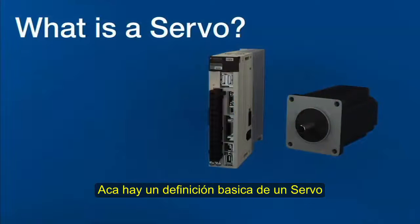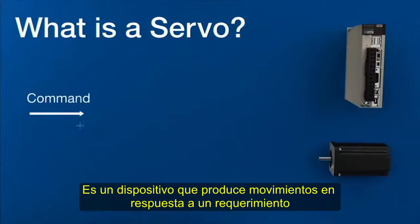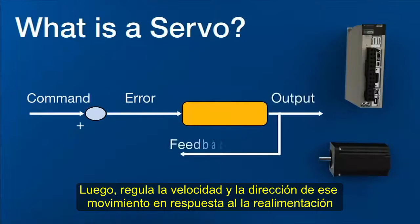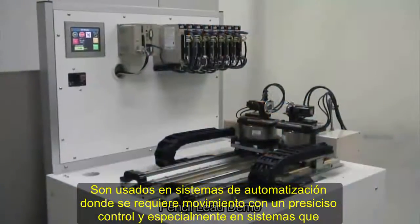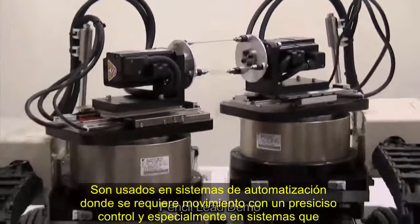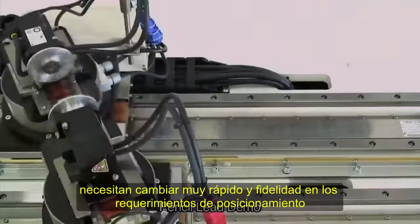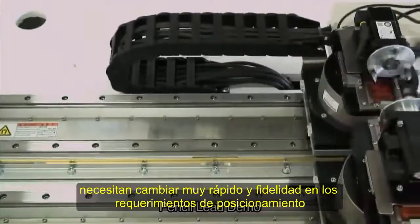Here's a basic definition of a servo. It's a device that produces motion in response to a command, then regulates the speed and direction of that motion in response to feedback. You'll find servos in use on automation systems that require motion with precise control, and especially in systems that need very swift response to commands and exact fidelity to position requirements.